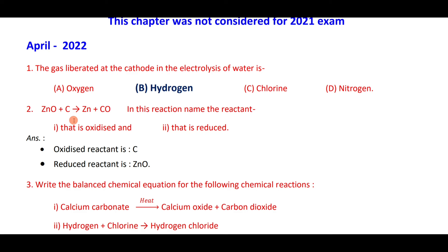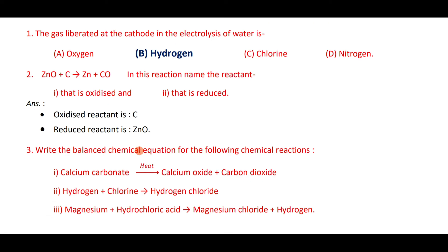In the reaction ZnO plus C gives Zn plus CO: carbon is oxidized to carbon monoxide, and zinc oxide is reduced to zinc. Therefore the reduced reactant is ZnO and the oxidized reactant is C.